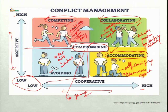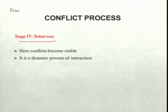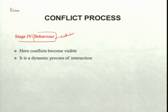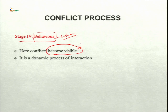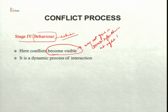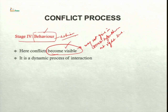After stage three — intentions — we move on to stage four, which is behavior. Behavior is the action we take, and here the conflict becomes visible. For example, if you have an opposing view with someone and you do not inform him about a meeting time schedule, you have behaved in a particular manner visible to others — you have hidden information. So behavior is a dynamic process of interaction where people manifest in their actions what they feel from inside.